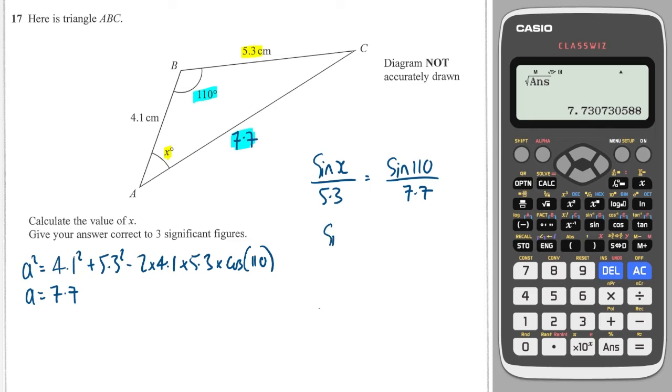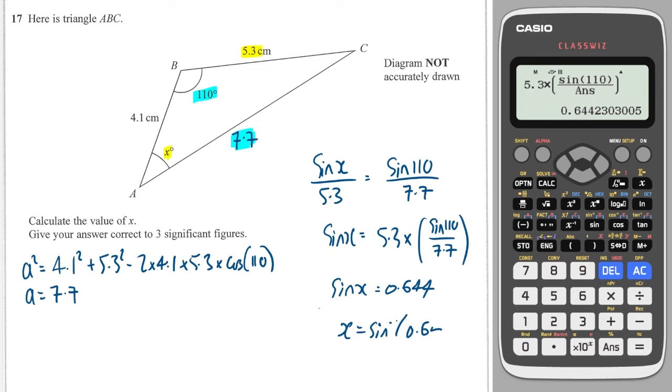I can rearrange this by multiplying both sides by 5.3. So I get 5.3 times by sine of 110 over 7.7. So we put that into our calculator, and that equals 0.644 so sine x equals 0.644. Therefore x is equal to inverse sine of 0.644 and we press shift sine of that last answer equals and it's 40.1.